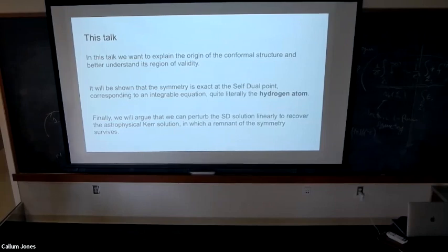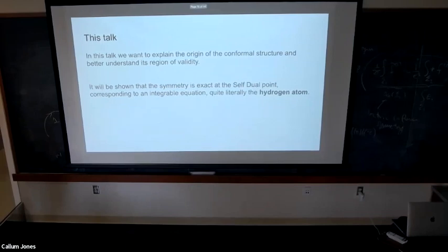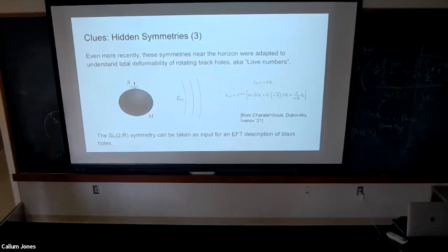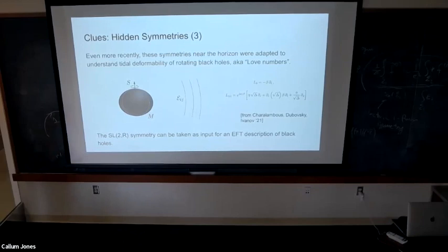Question: How do you use the SL(2,R) symmetry in the EFT? There are many EFT descriptions including wordline EFT. The symmetry transforms different components of your tensors in such a way that you can constrain the Wilson coefficients — it's literally a transformation of the action. The question of which effective action to use is more subtle. Also, the statement about the scalar wave equation — is it true for other spins? Yes, it's true for any spin. These generators have a simple generalization coming from a Teukolsky equation, which admits this approximation for any spin in the near zone.